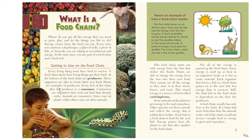Every link of the chain after the producer is a consumer — a living thing that consumes or eats another. Consumers are organisms that must eat food that already exists; they can't make their own food. They have to find something else to eat to get their energy. Animals are consumers. Some may eat plants while others may eat other animals.